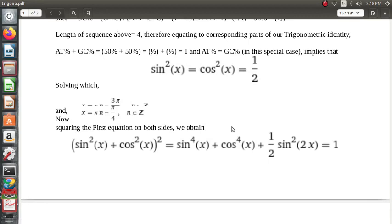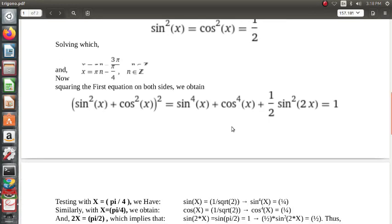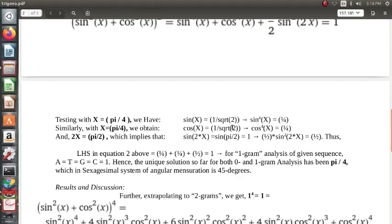And again squaring this equation, we have sin⁴(x) + cos⁴(x) + (1/2)sin²(2x) = 1. And solving this as well, we get x equal to π/4 radians. So in sexagesimal system of angular measurement, it is 45 degrees.